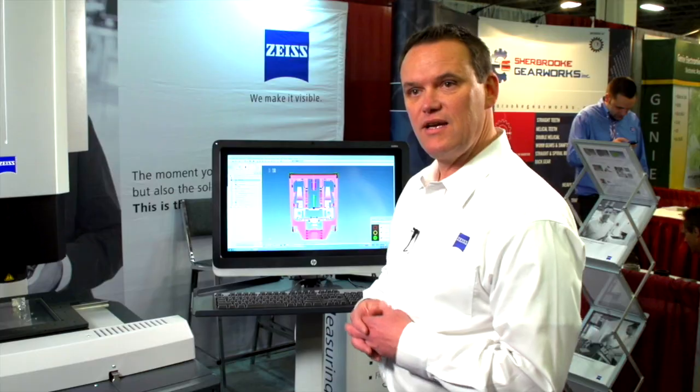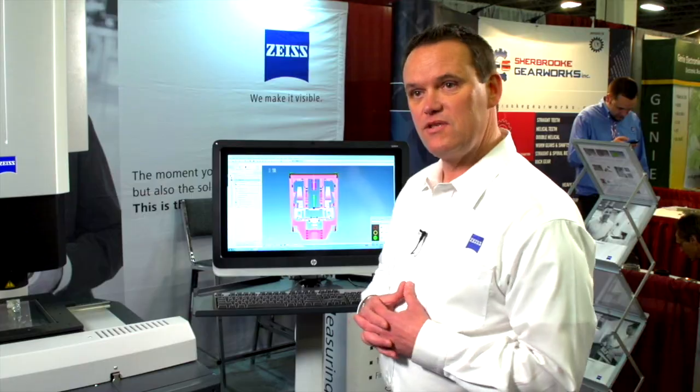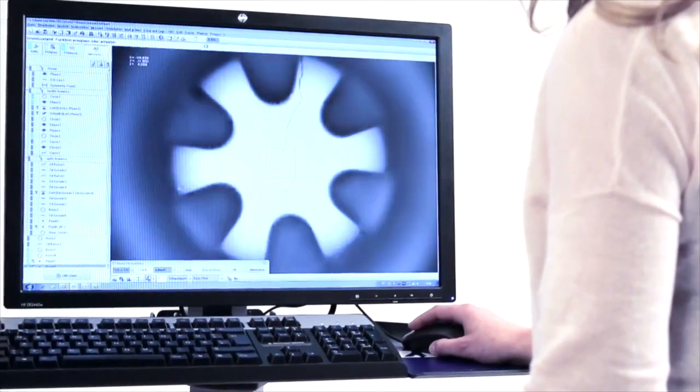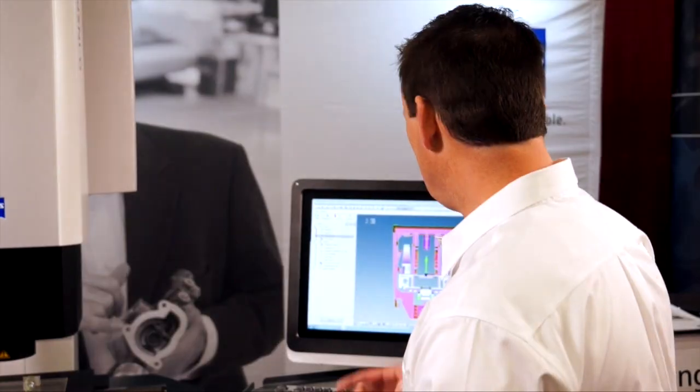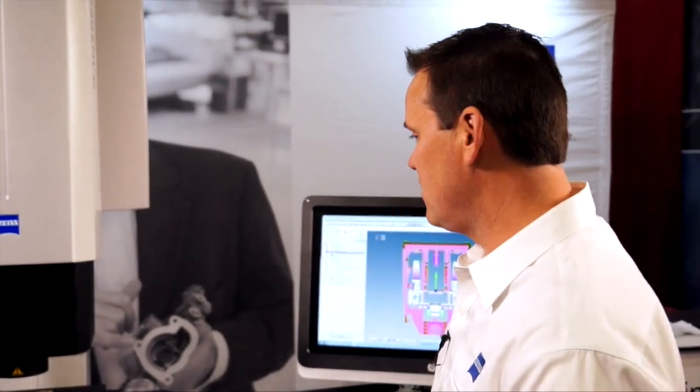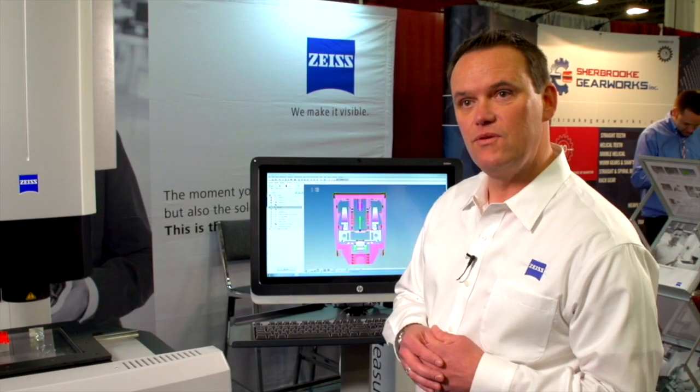Calypso is the software based on all of Zeiss's systems. It's a 3D programmable software package that you can import your CAD model, program right from that CAD model, and direct the machine to measure the appropriate features you might be interested in.